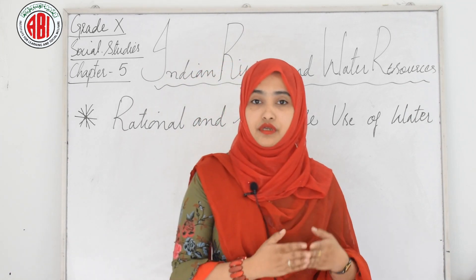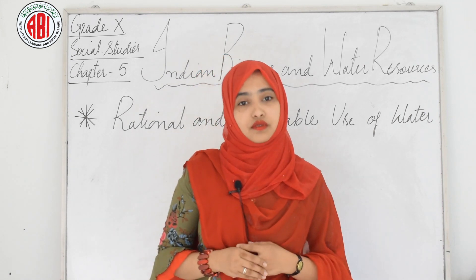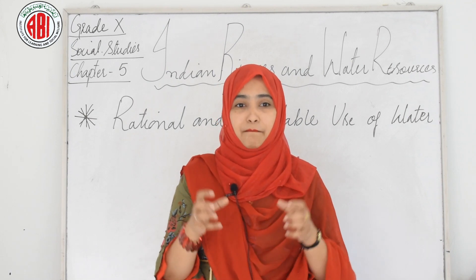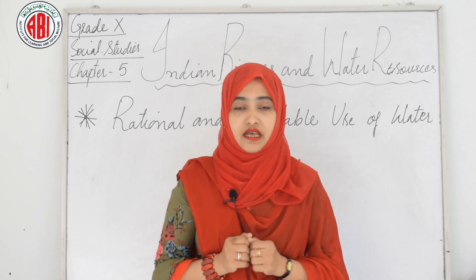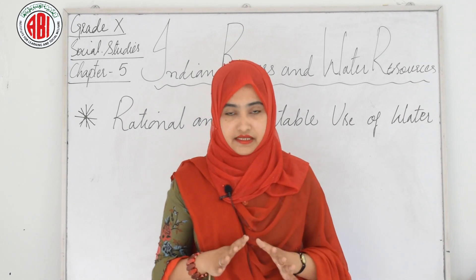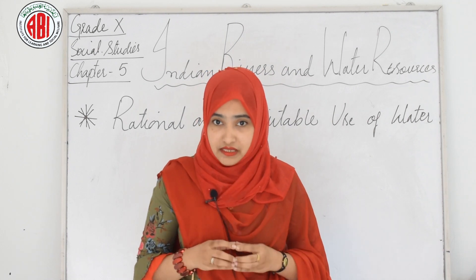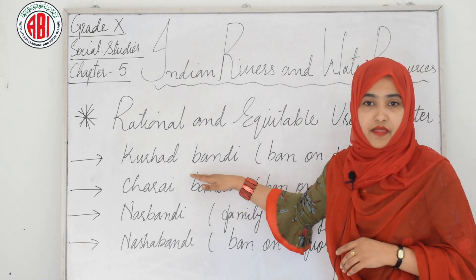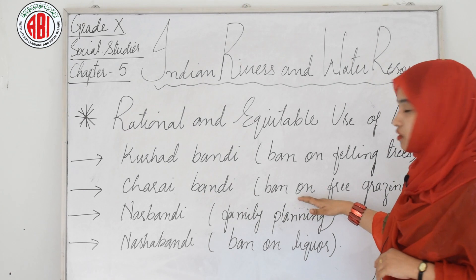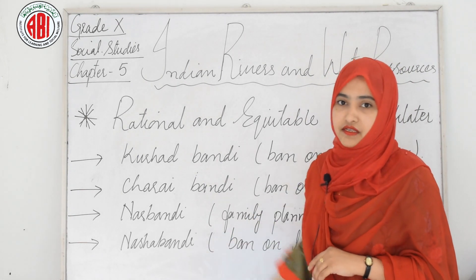The Adarsh Gram Yojana worked to conserve water and groundwater resources. When it was launched in Maharashtra, there were preconditions set for the selection of villages. The most important were four bandis: Kurhad-bandi — ban on felling trees; Charai-bandi — ban on free grazing; Nasha-bandi — ban on liquor; and a family planning bandi.